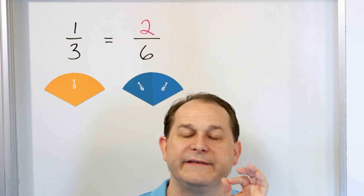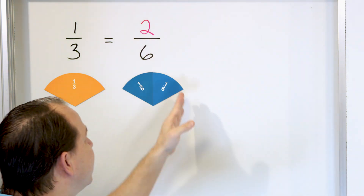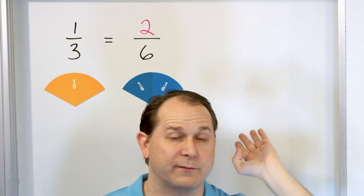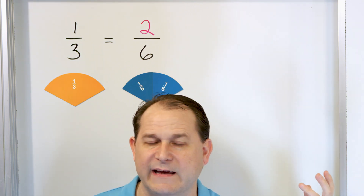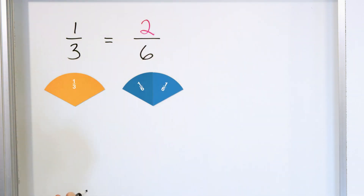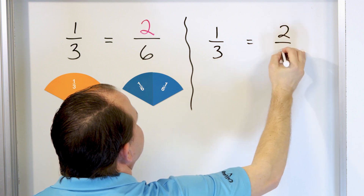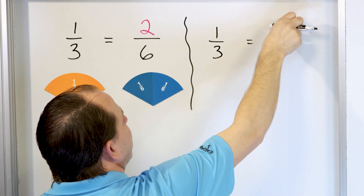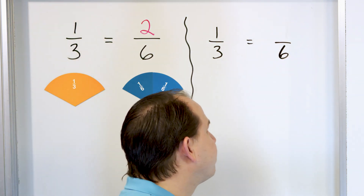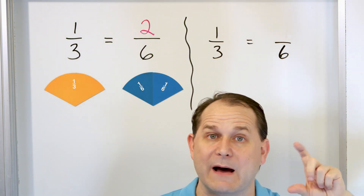So you need to get used to the idea of seeing fractions with different numbers, but yet they can mean the same thing. None of us are going to be able to look at this and understand that they're the same just in our minds — not even me. But what we do with the magnets here is prove to ourselves that this is the case. And here I want to show you how to calculate it. So let's say we didn't have this magnet at all and we wanted to calculate the answer. 1/3 is equal to some fraction with a 6 on the bottom. Every fraction — in this case 1/3 — you can multiply it by any number you want as long as you do it to the top and to the bottom.